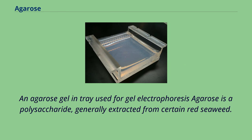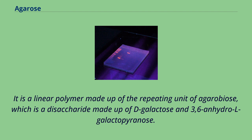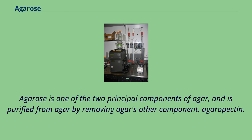An agarose gel in tray used for gel electrophoresis. Agarose is a polysaccharide, generally extracted from certain red seaweed. It is a linear polymer made up of the repeating unit of agarobiose, which is a disaccharide made up of D-galactose and 3,6-anhydro-L-galactopyranose. Agarose is one of the two principal components of agar, and is purified from agar by removing agar's other component, agaropectin.